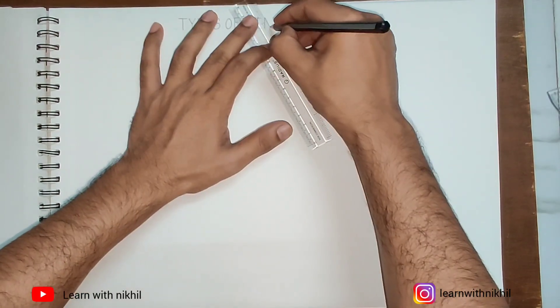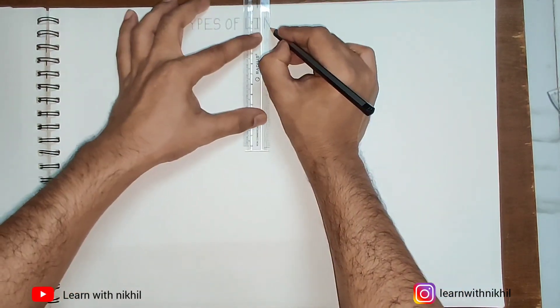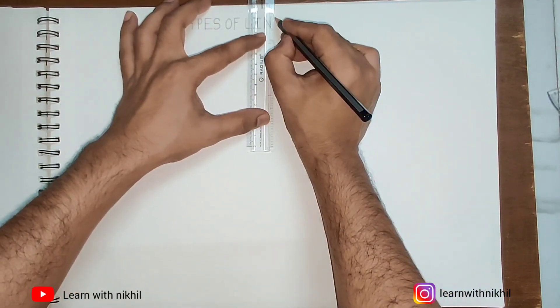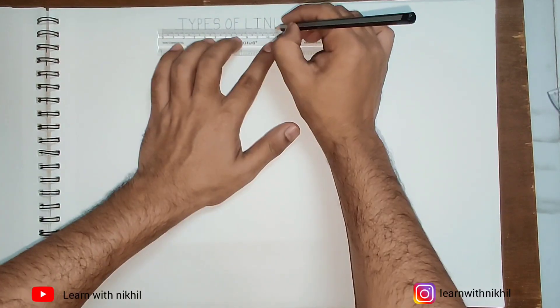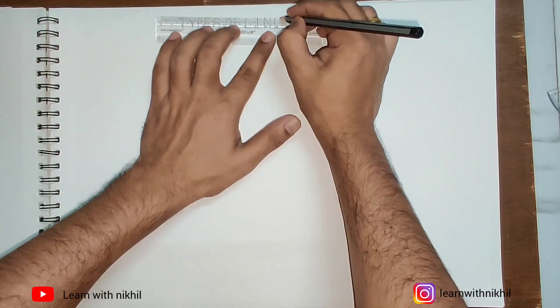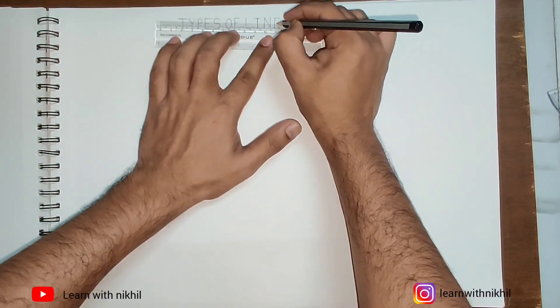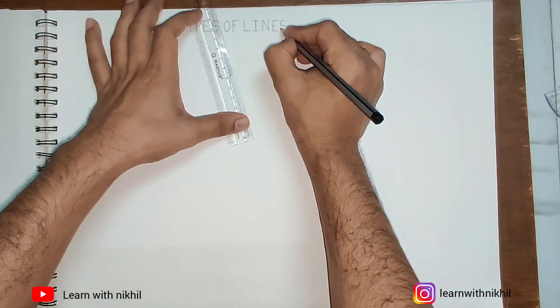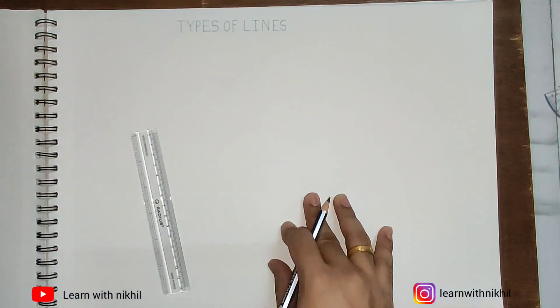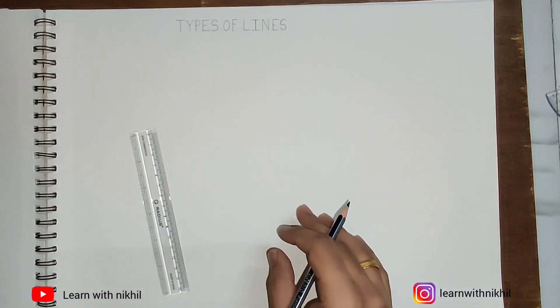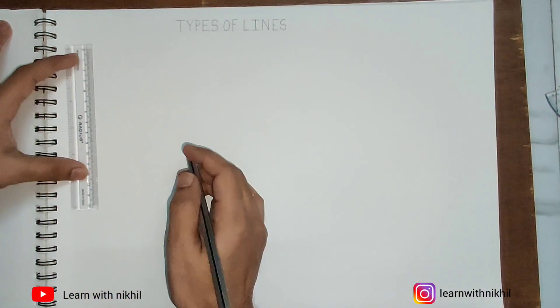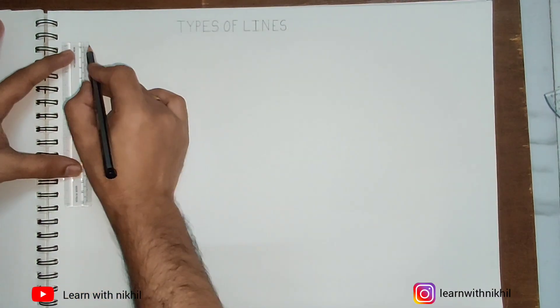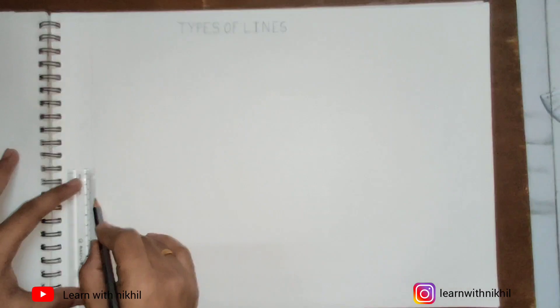Between the words and between the letters, the distance and height should remain proper. Now we'll draw a table consisting of four columns.